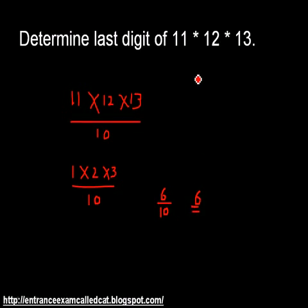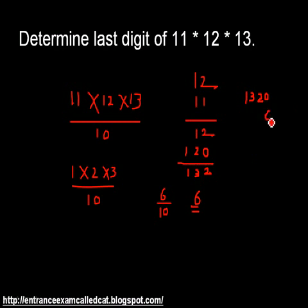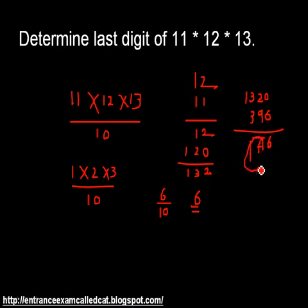We can verify: 11 × 12 = 132, and 132 × 13 = 1716. So the unit digit of the entire product is 6, which confirms our answer.